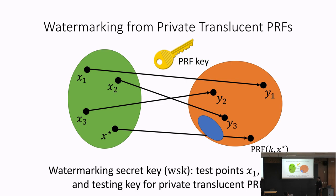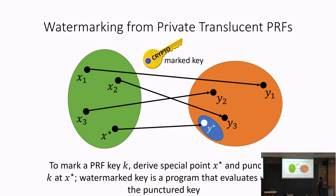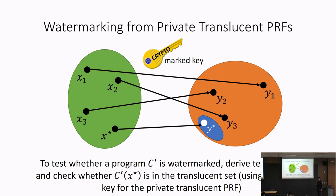Now let's see why this is useful for building watermarking. The watermarking secret key consists of the test points as before, plus a testing key for this translucent PRF. To mark the PRF, we follow the same procedure: evaluate on the test points, derive the special point x*, and simply puncture the PRF at x*. We no longer rely on programmability — instead we rely on the fact that when a punctured key evaluates at x*, we land in the special subspace.